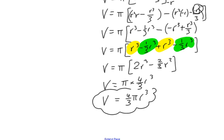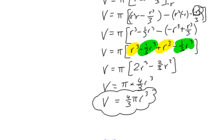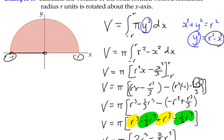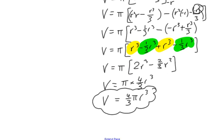And we know, or we should know that that's the formula for the volume of the sphere, and that's where we get it from. We get it from the idea that we can take a semicircle and rotate it around the x-axis to form a sphere, and from that we can actually derive its formula.